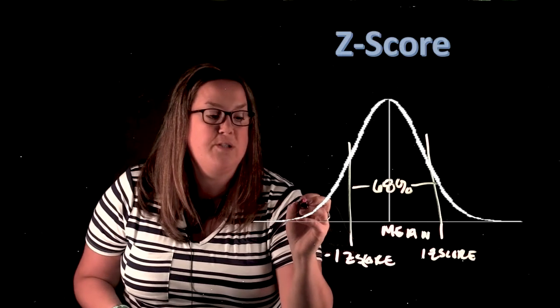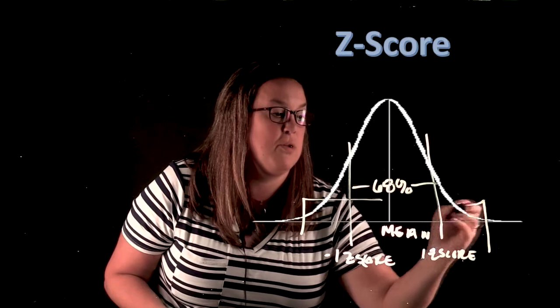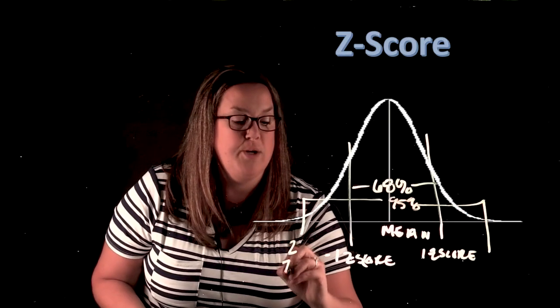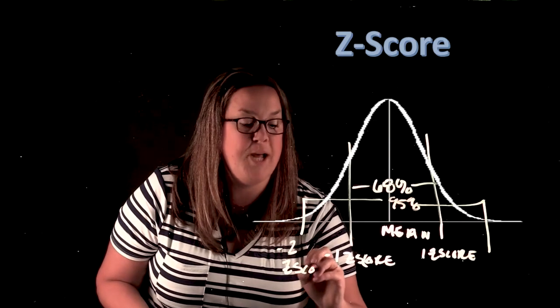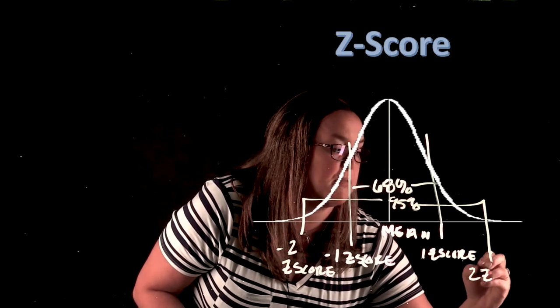If we went out two z-scores, we would have 95% and that would be two z-scores, but this would be a negative z-score because it's below. This would be a positive z-score because it's above.